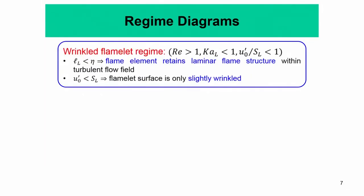To summarize what we have done and to formally state: in the wrinkled flame region, we have the Reynolds number greater than 1, the Karlovitz number less than 1, and U prime by SL less than 1. This means that your flame thickness is less than the Kolmogorov length scale, and the flame element retains a laminar flame structure within the turbulent flame suite.